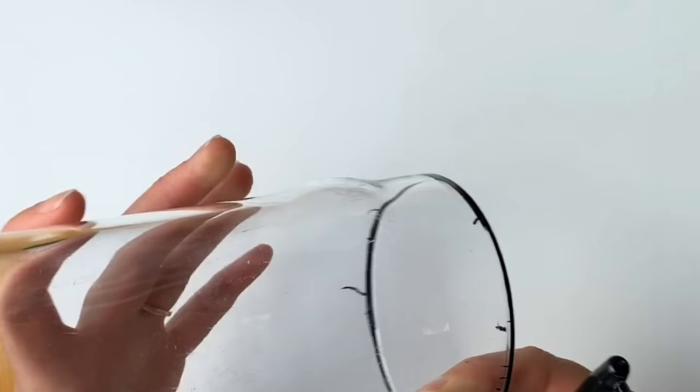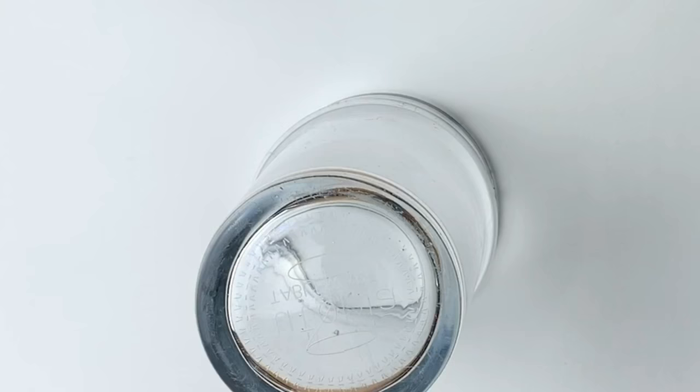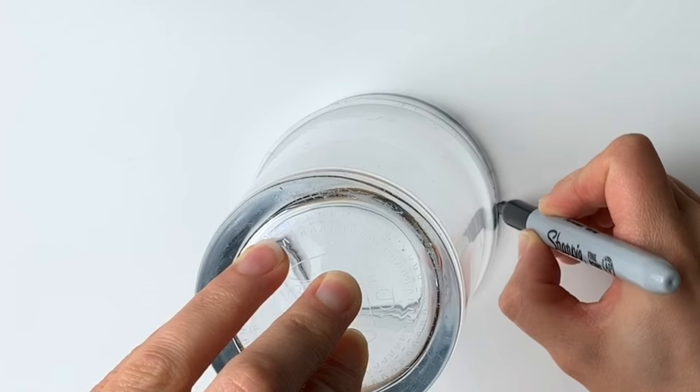I'm going to be using a glass so pop it in the center of the page. Get yourself a pen or a pencil and draw around your circular object or if you're really clever you can draw it freehand.